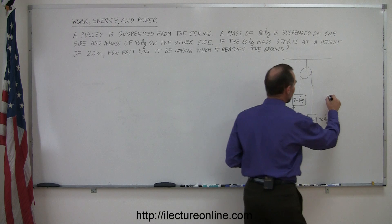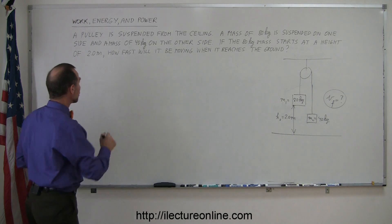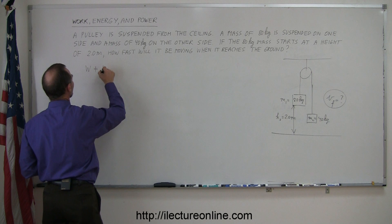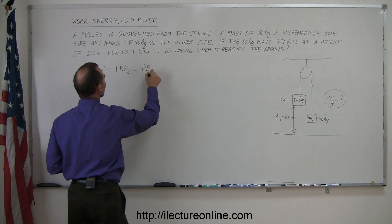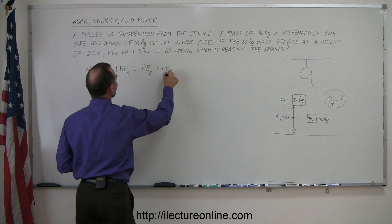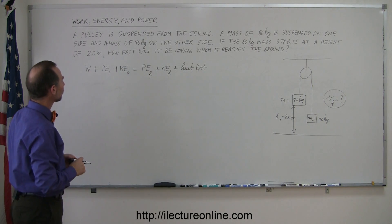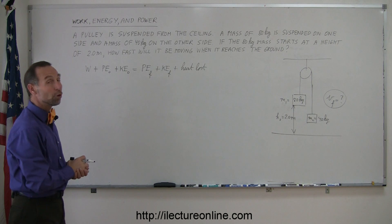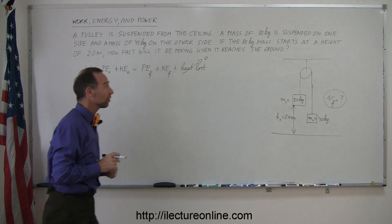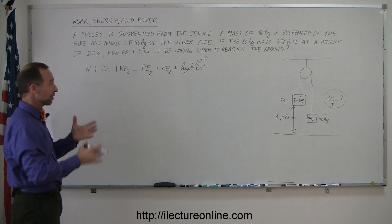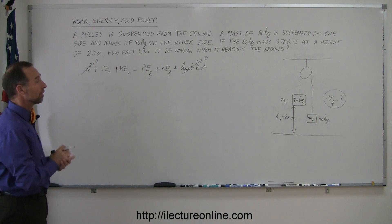The question is: v-final equals what? The equation we're going to use is: work input to the system, plus initial potential energy, plus initial kinetic energy, equals final potential energy, plus final kinetic energy, plus any heat lost due to friction or wind resistance. Since the problem doesn't mention friction and it's a massless frictionless pulley, heat lost equals zero. And since nobody is doing any pushing, work input is zero. So it just becomes an interplay between potential and kinetic energy.